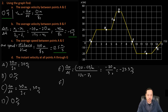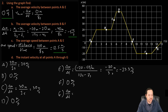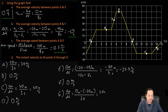Point F is flat, so instantaneous velocity is zero meters per second. At point G: x2 is zero meters minus x1 of negative 20 meters, giving delta X of 20 meters. Delta T is 2 seconds. So 20 meters over 2 seconds equals 10 meters per second.